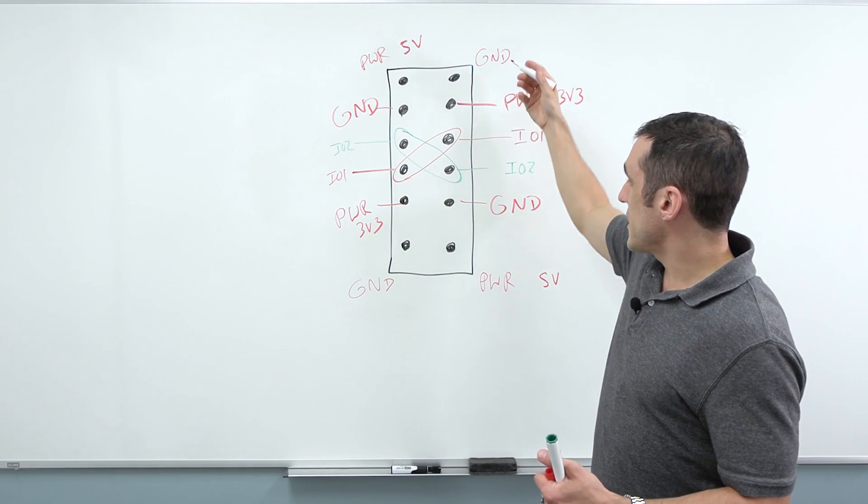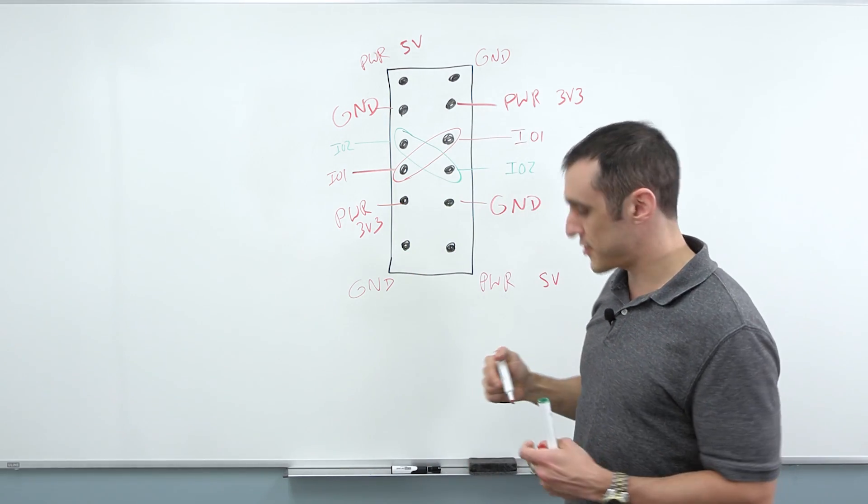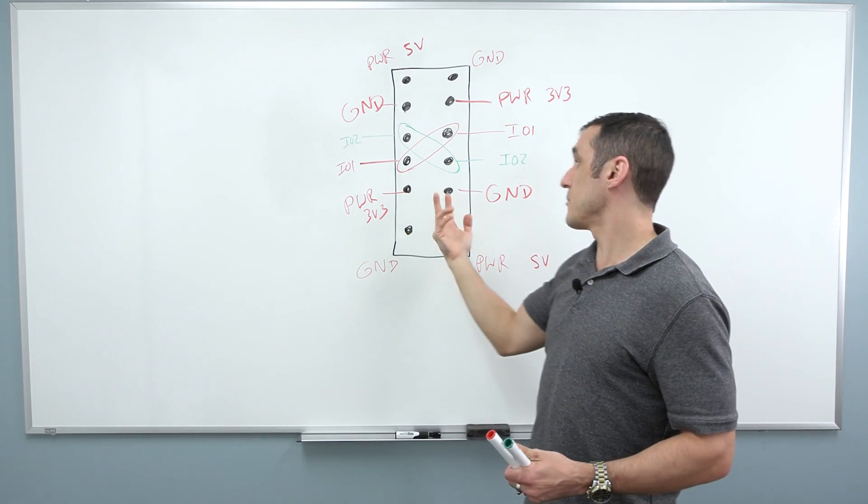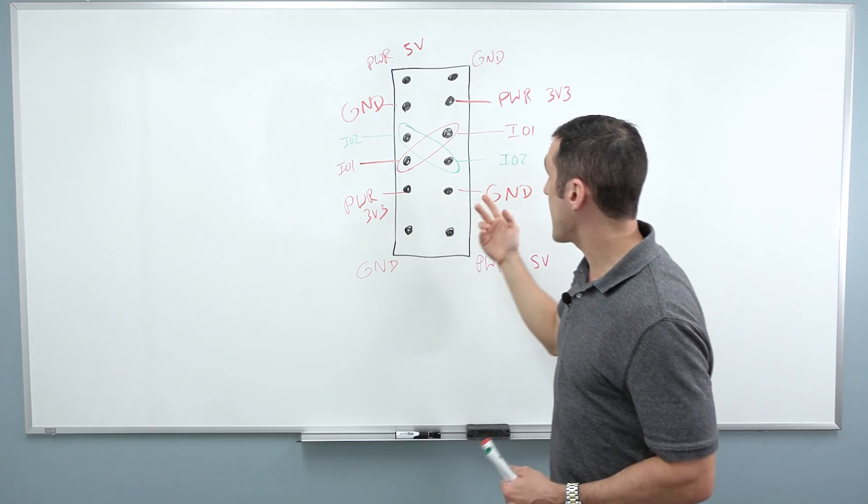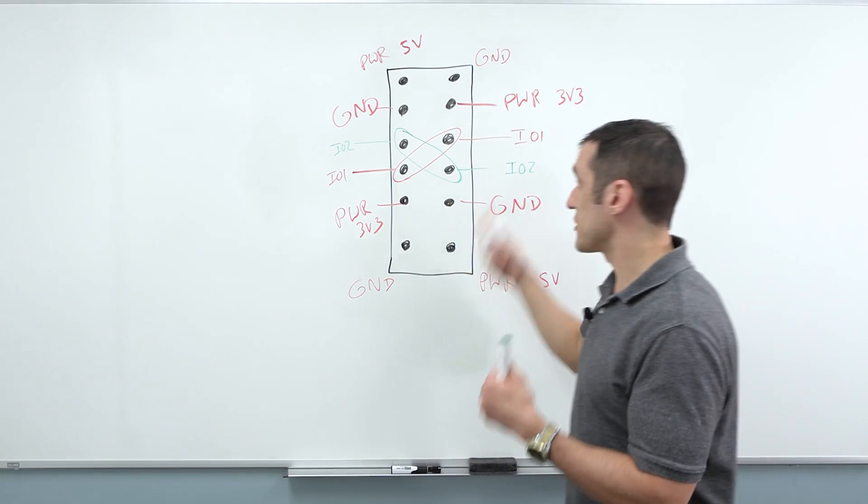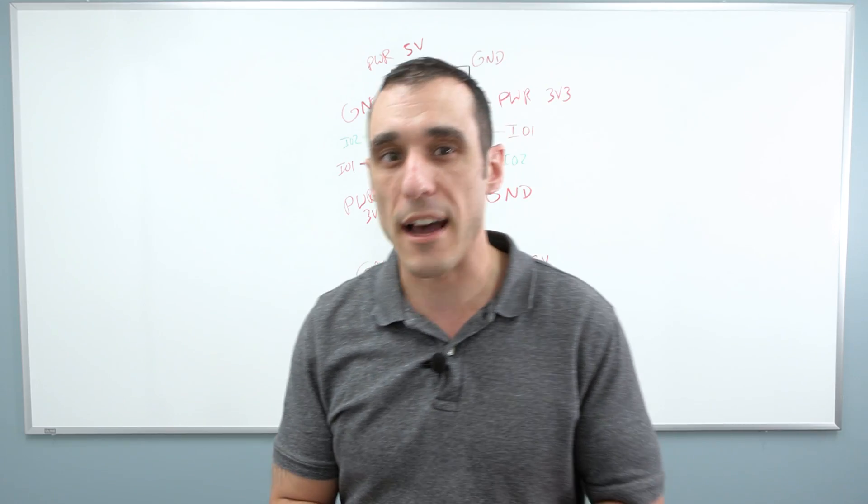So just by extending the pin header by two pins, pretty small extension, you're able to create this nice, easy connection between the IOs. You've also created some additional space if you need to have some additional power and another ground pin, and this is all done. This is rotation proof. So hopefully this gives you some ideas for how to design your own connector pinout.